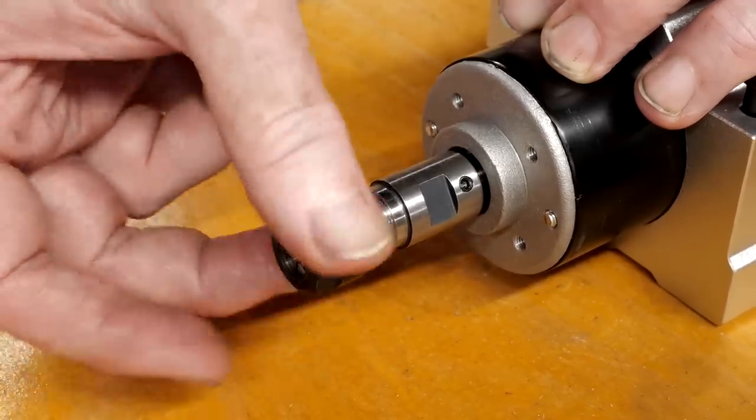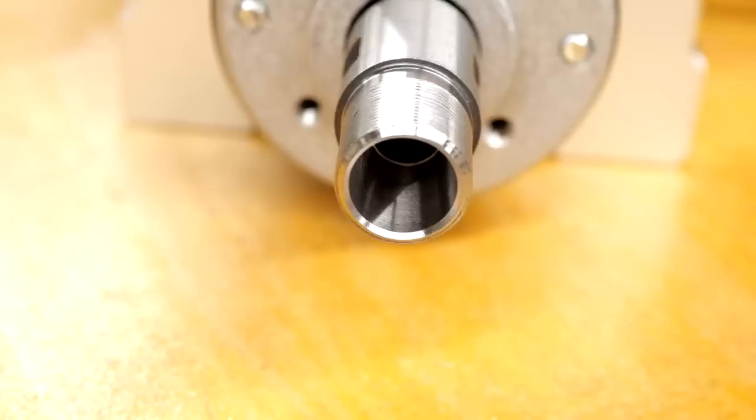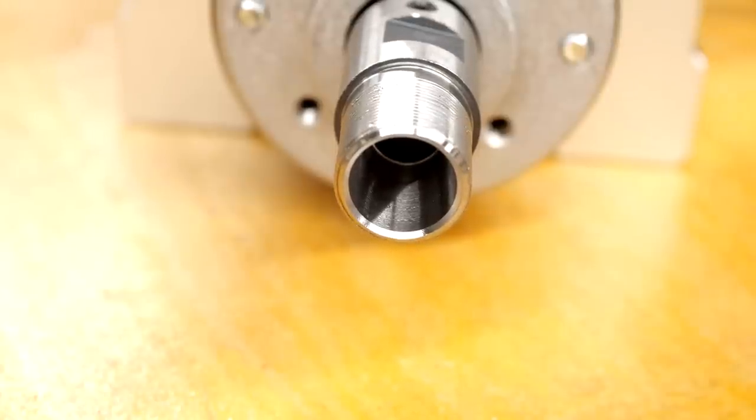Let's see what the taper looks like. This tapered surface is critical to making sure the tools fitted to the spindle run true. To the naked eye, this is as good as any other ER collet chuck. It's not possible to tell by eye how true it runs though, so we'll need to measure that on the surface plate.